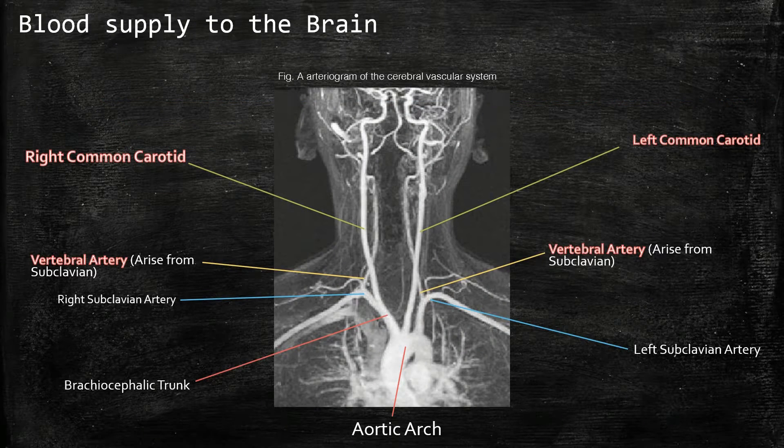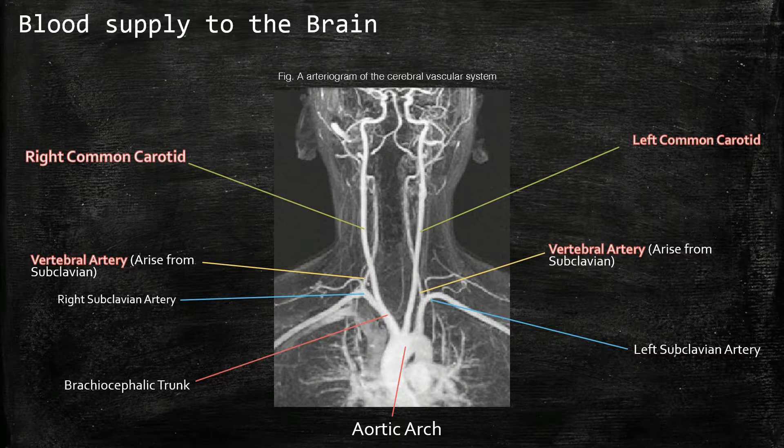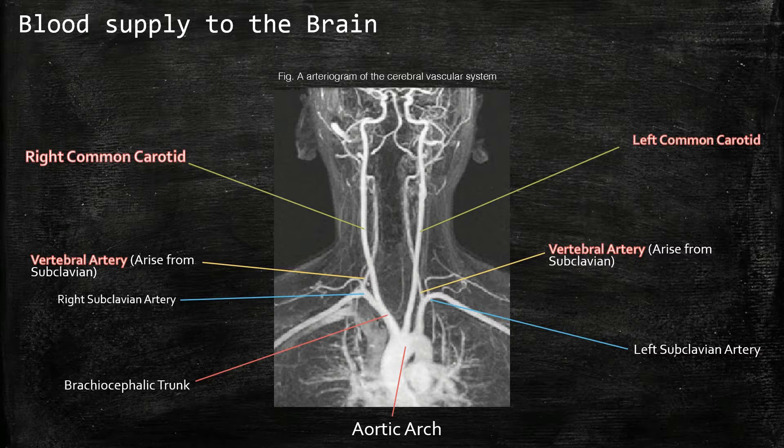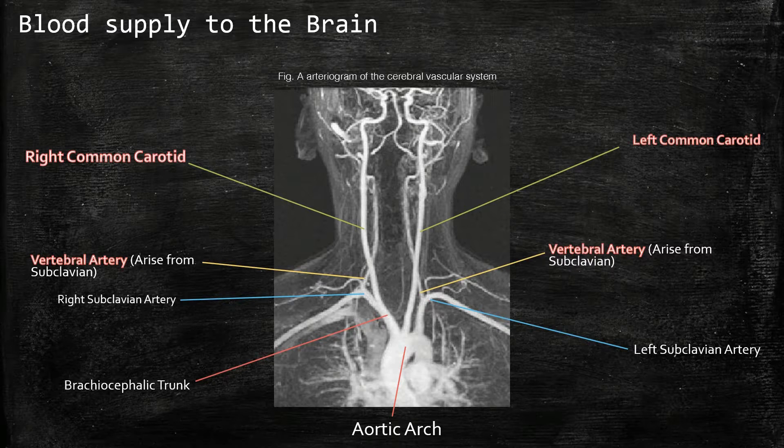Here is a cerebral vascular system arteriogram with the major vessels labeled. Note that the vertebral artery responsible for the posterior circulation branches off the subclavian.